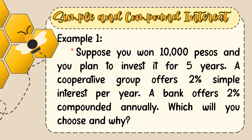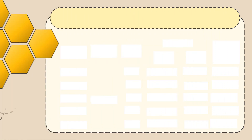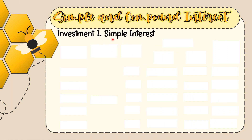Now let's have an example. Suppose you won 10,000 pesos and plan to invest it for five years. A cooperative group offers 2% simple interest per year, and a bank offers 2% compounded annually. Which will you choose and why? Let's first solve the 2% simple interest from the cooperative group.